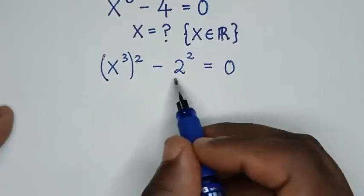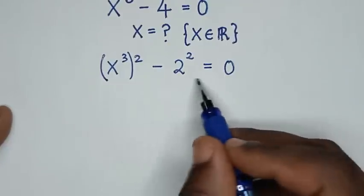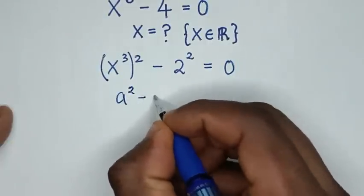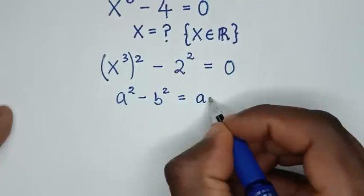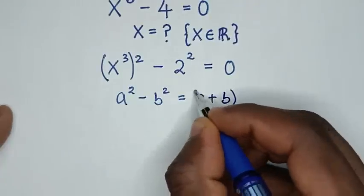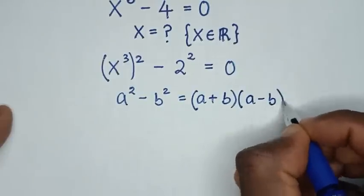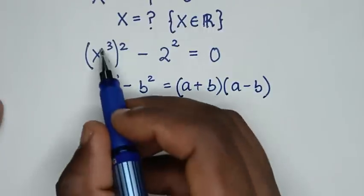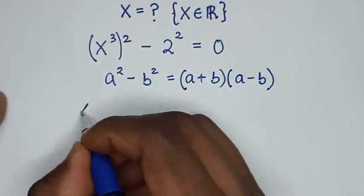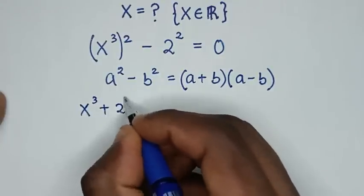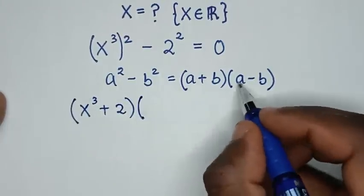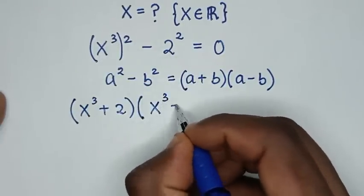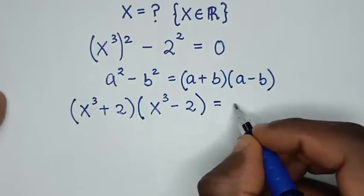Then, in the next step, from here it is now in the form of a difference of squares. So, we will apply the algebraic rule which is a² minus b² is equal to (a + b)(a − b). By applying this, the form a + b gives x³ + 2, and a − b gives x³ − 2, so we have (x³ + 2)(x³ − 2) = 0.